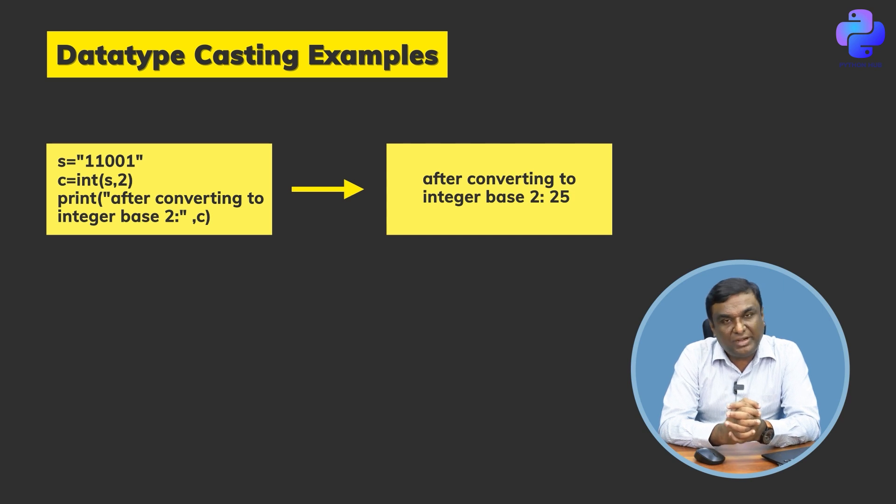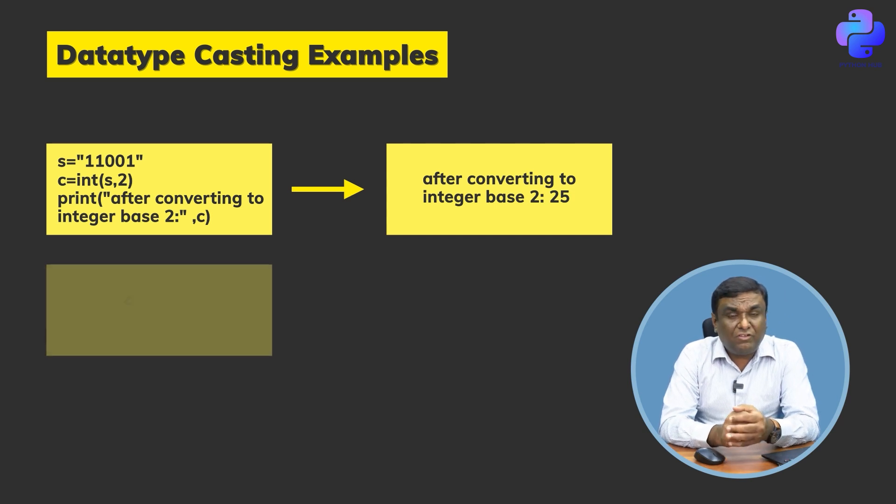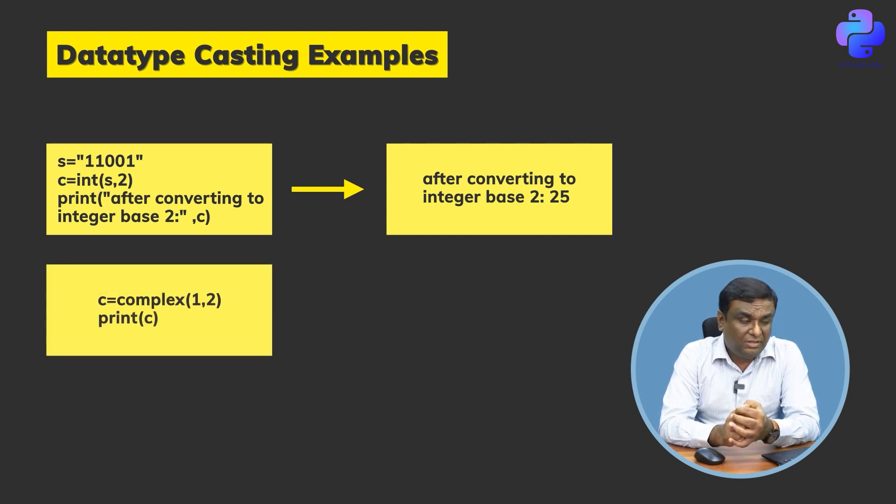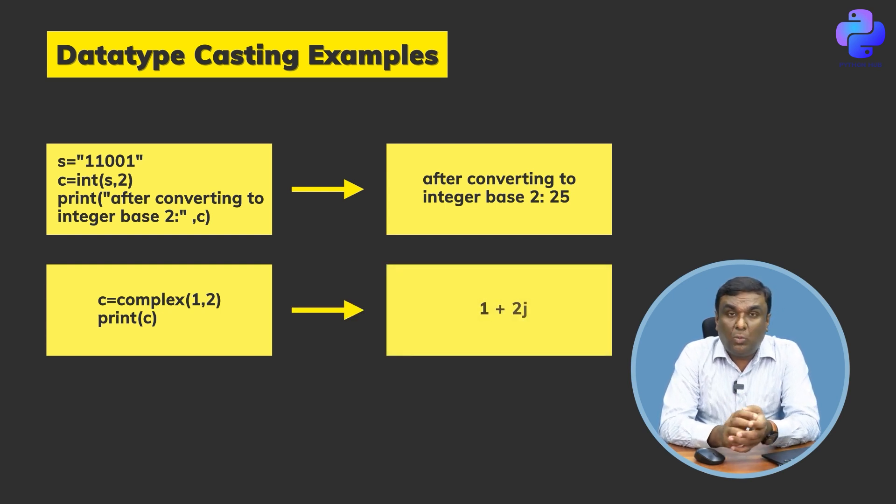You can see the output on the right side. Same way, I have a complex data type. Let's look at the second example. The variable c as complex(1, 2) passed across to it. It means I have some data (1, 2) which I want to convert to complex variables. When I print c, what do you think the output will be?